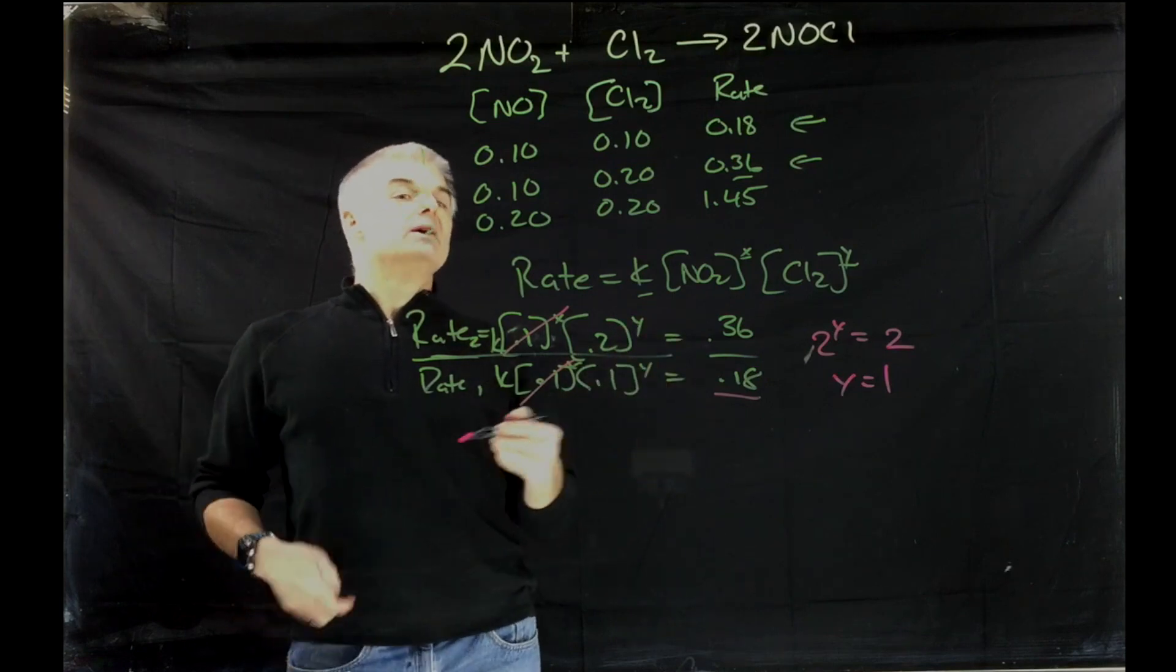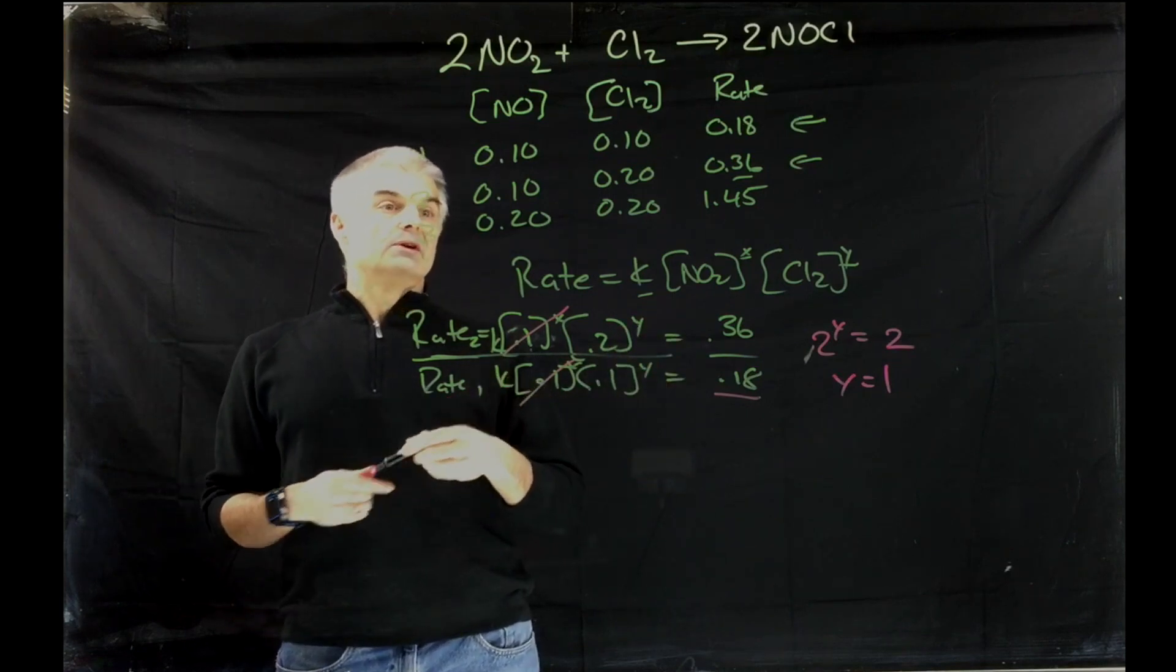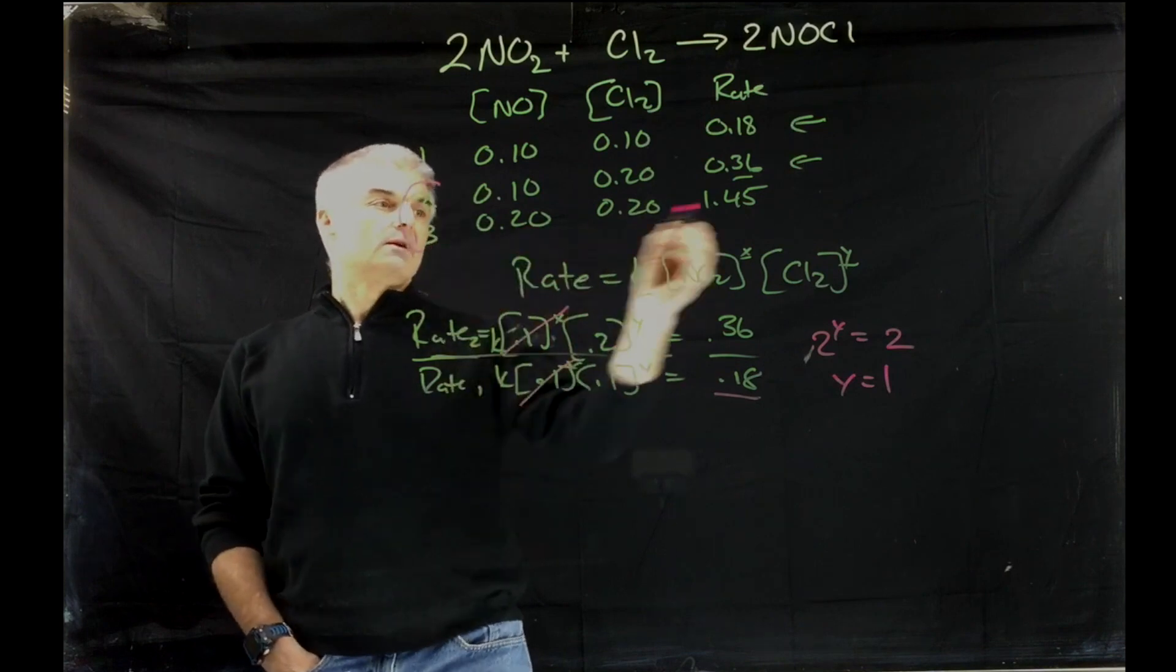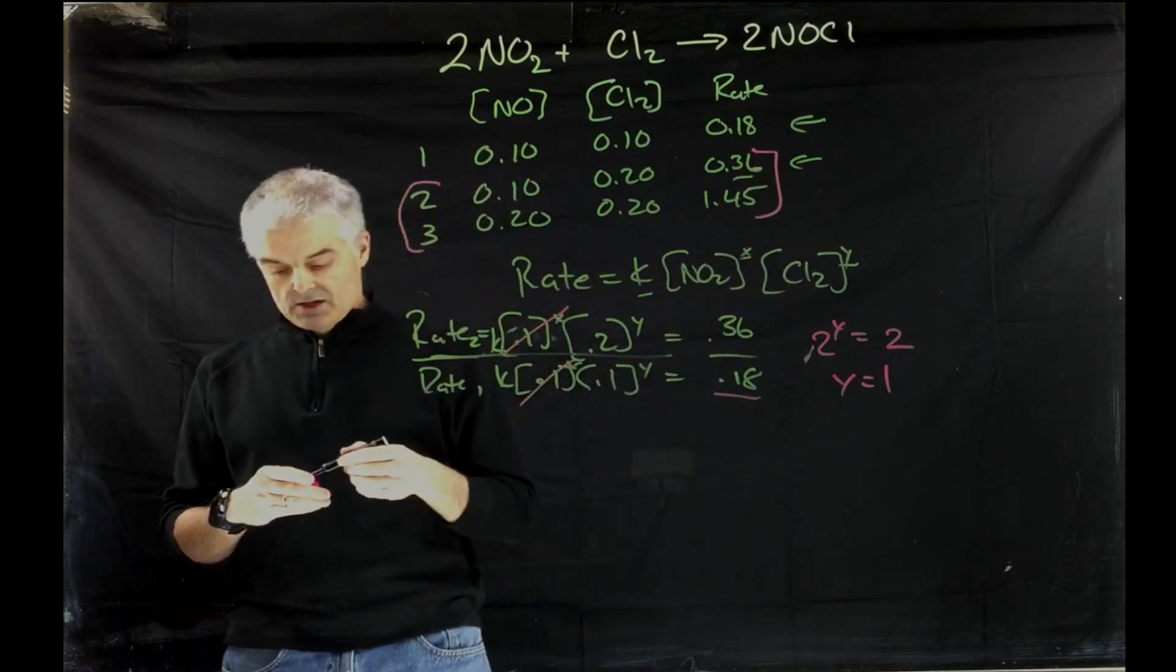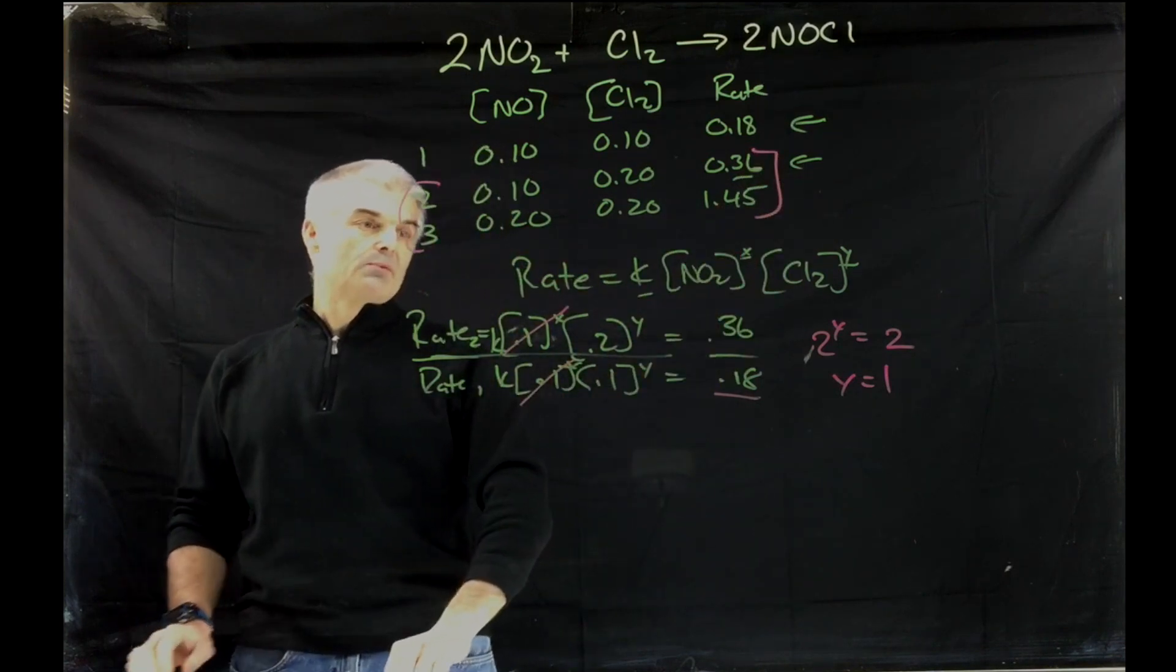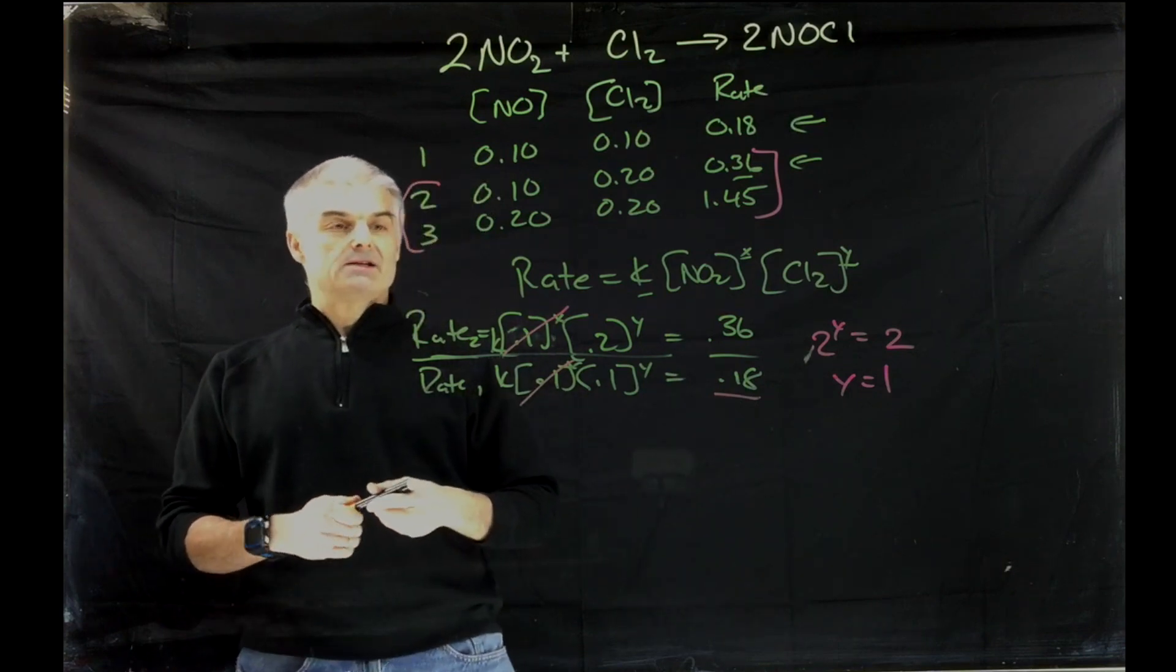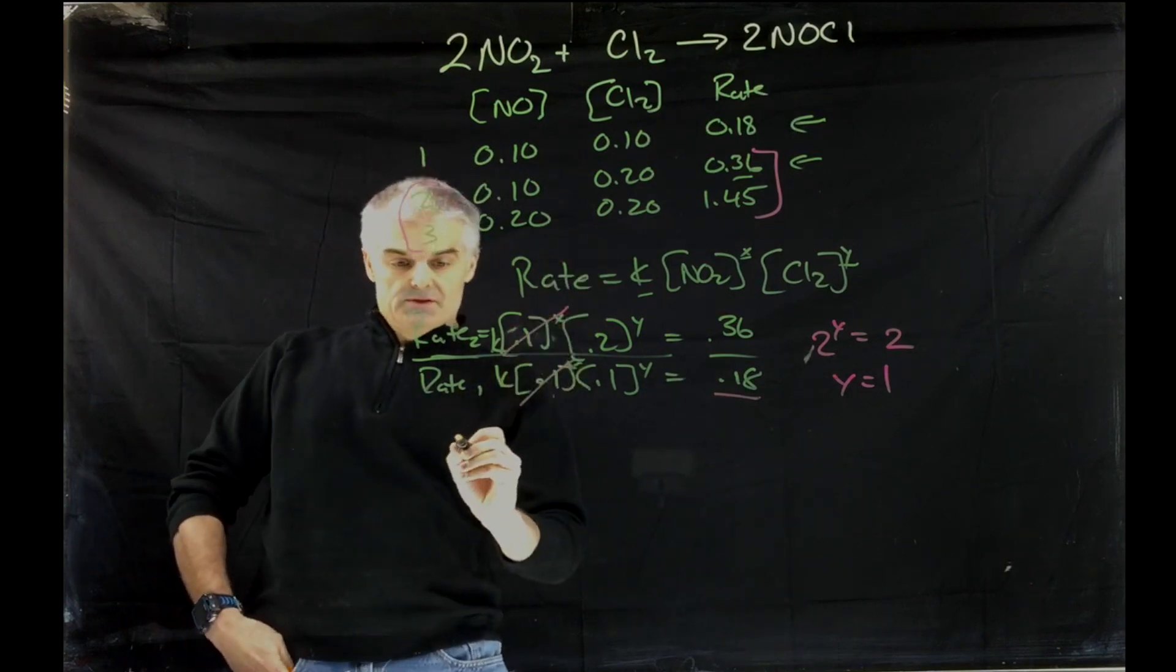We're going to repeat this process now to find out x. We can take reaction number 2 and reaction number 3 and repeat the process. I will take 3 divide by 2.